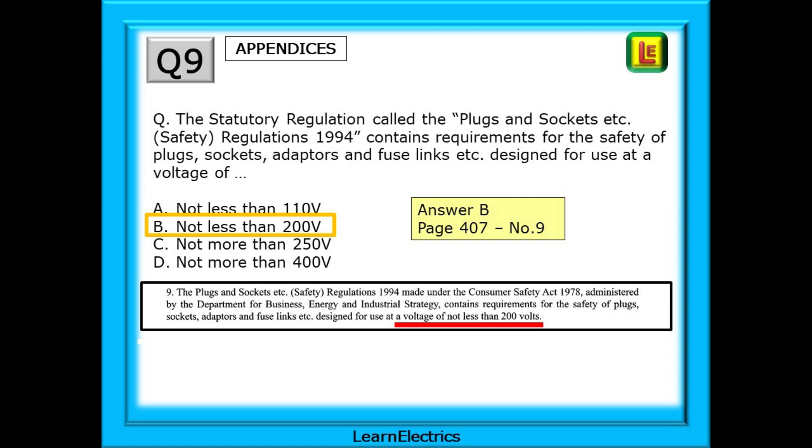Now go to page 406 as shown. Look through the listed regulations and on page 407 we find item number 9, the plug and socket regulations. About three lines in, we come across the answer, not less than 200 volts. Choose answer B.